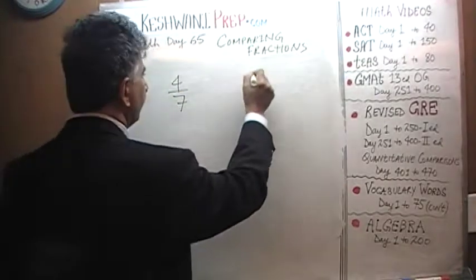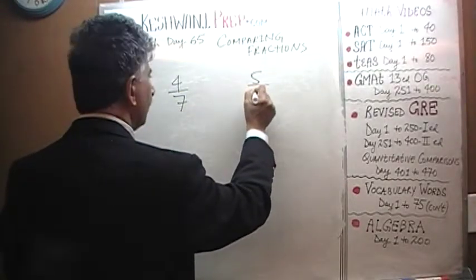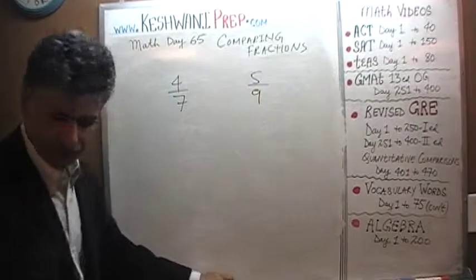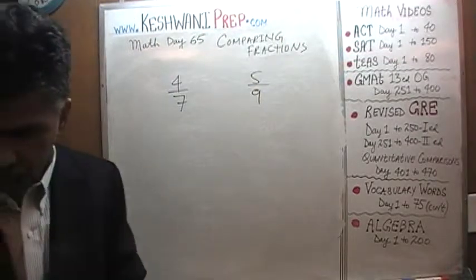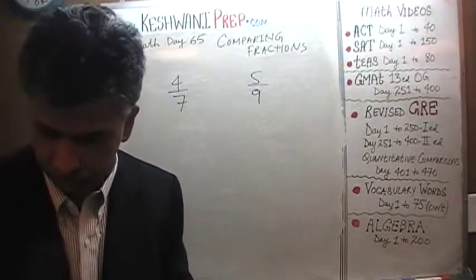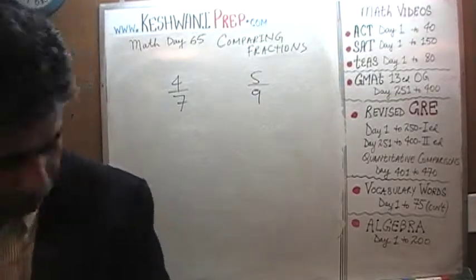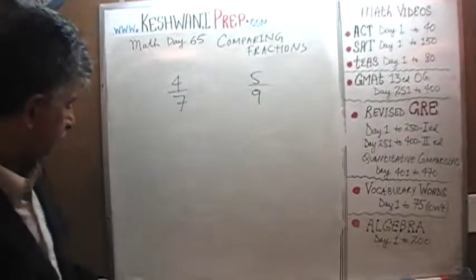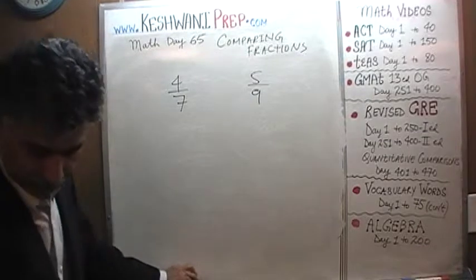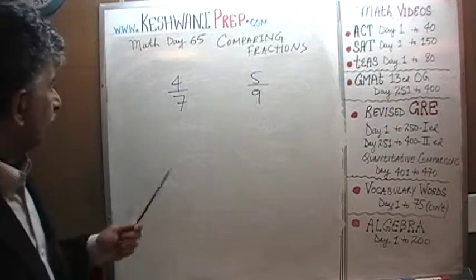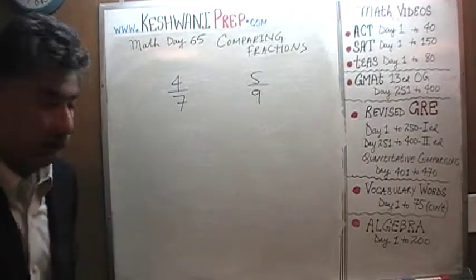Let's do one more. 4 sevenths versus 5 ninths. I need to change the marker. I don't know why they keep dying in 2 days. Alright. We need to get rid of this 7 from the bottom here. It's very simple.